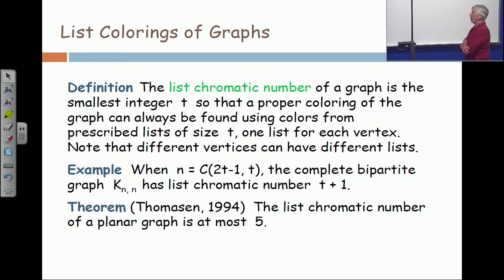If you put on every vertex in a planar graph a list of five colors, then with good thinking and clever moves, it can always be properly colored from those lists. And the five is best possible. That's a very non-trivial result.